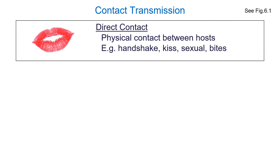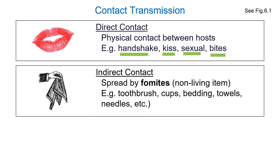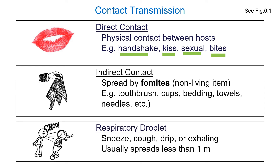Contact transmission includes direct contact — handshakes, kisses, sexual contact, animal bites — and indirect contact. Indirect contact is why we're being told to wash our hands during the COVID-19 pandemic, because many things can act as fomites. A fomite is a non-living item that can transmit disease — doorknobs, toothbrushes, handkerchiefs, and pretty much any non-living surface an organism can live on, including cash.